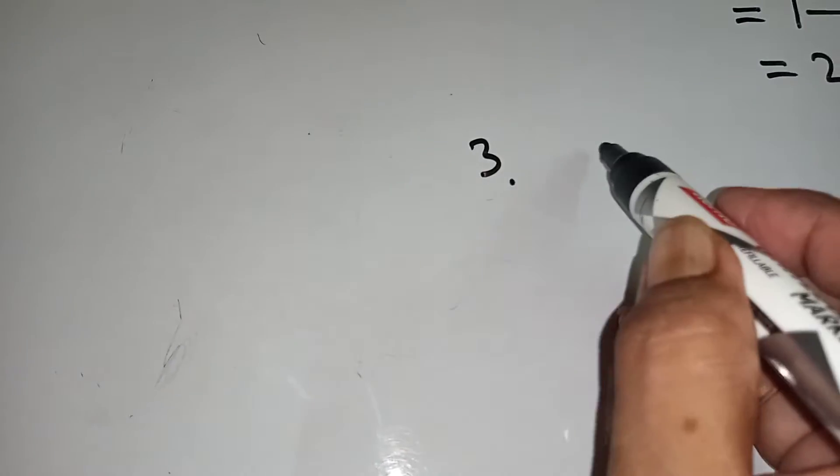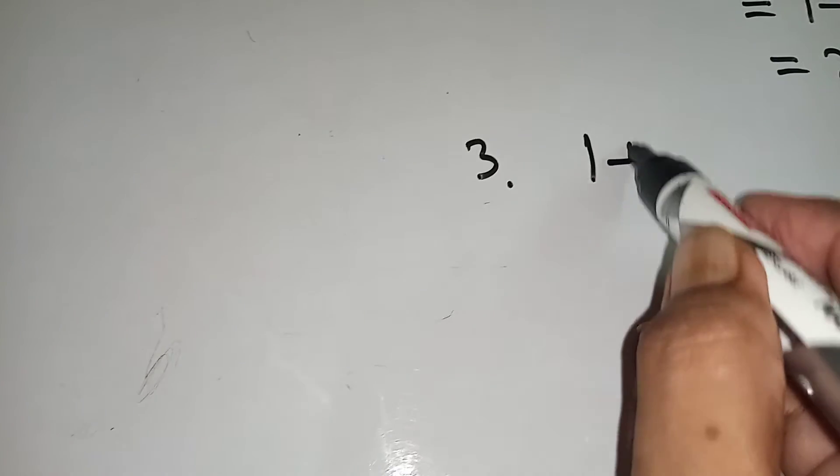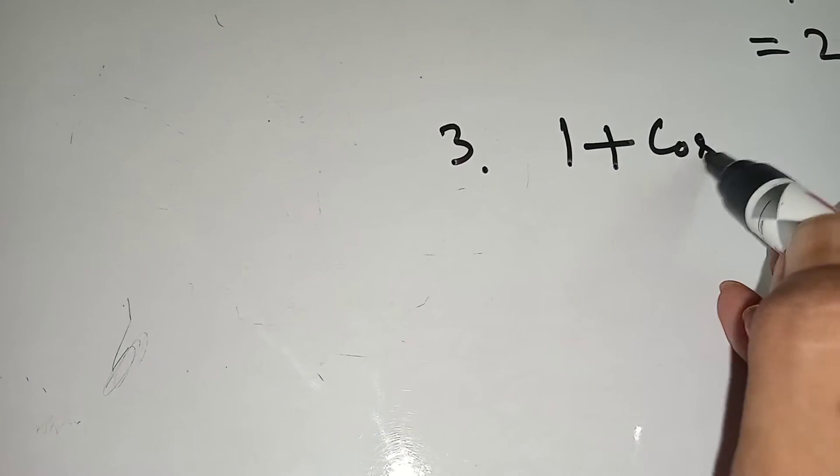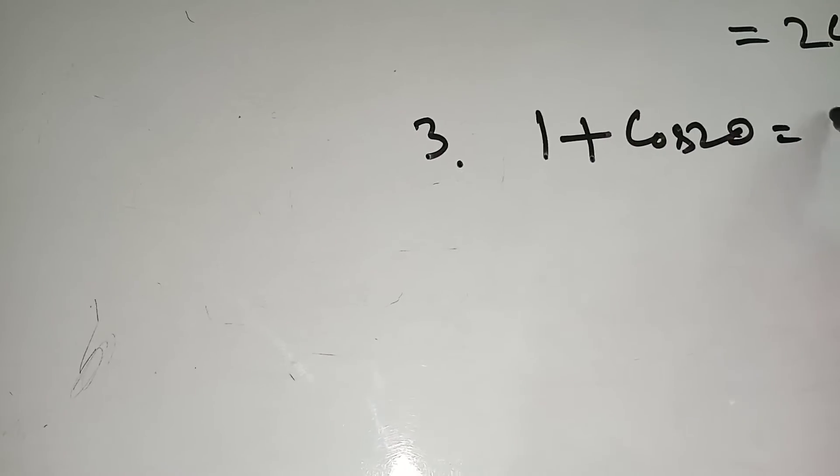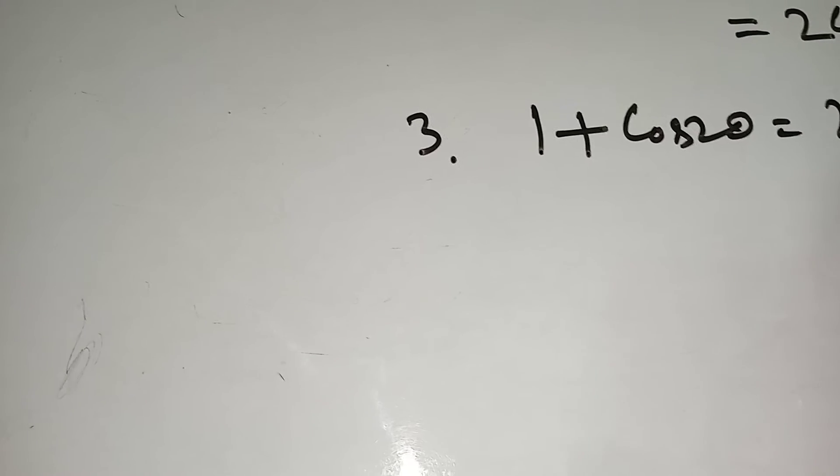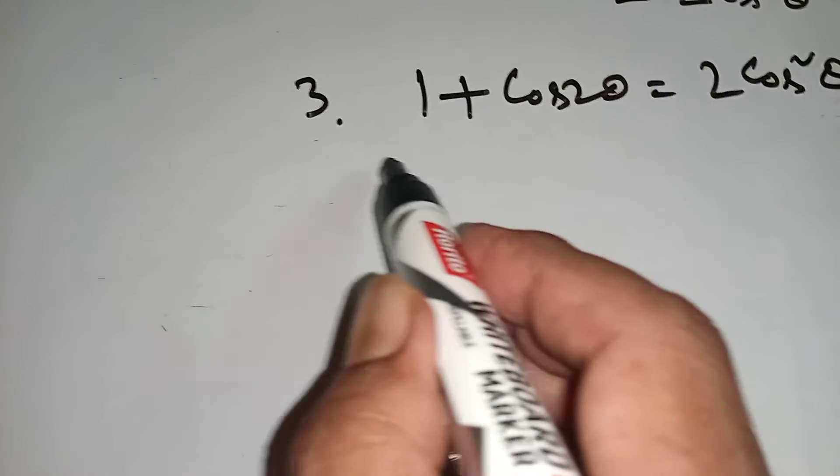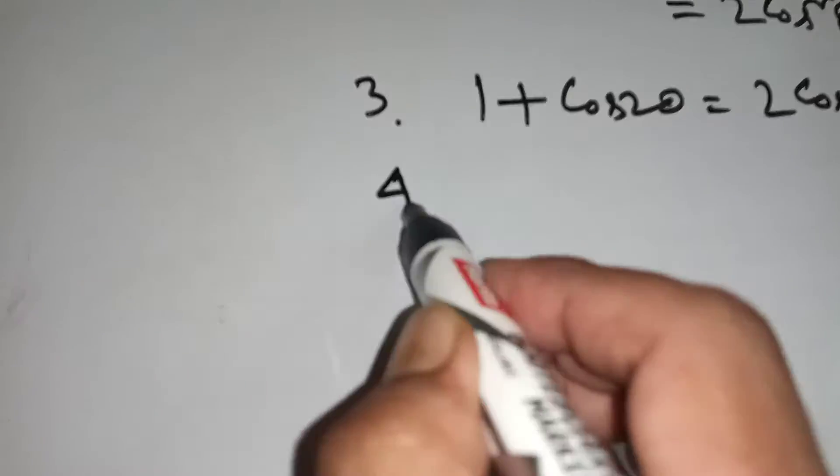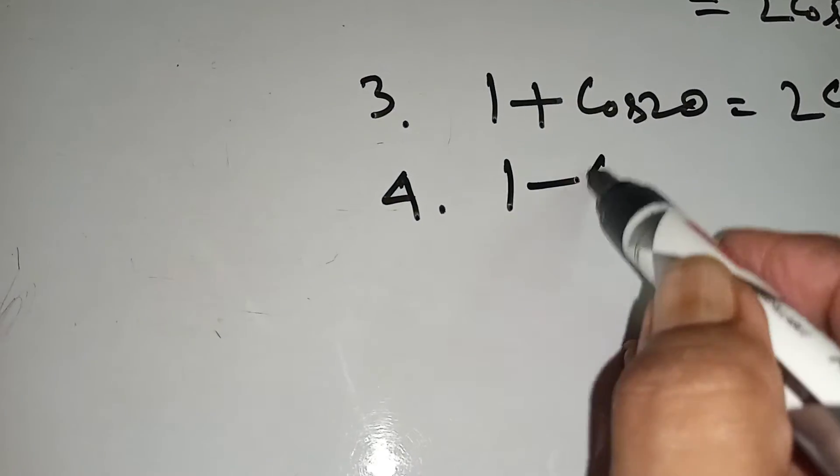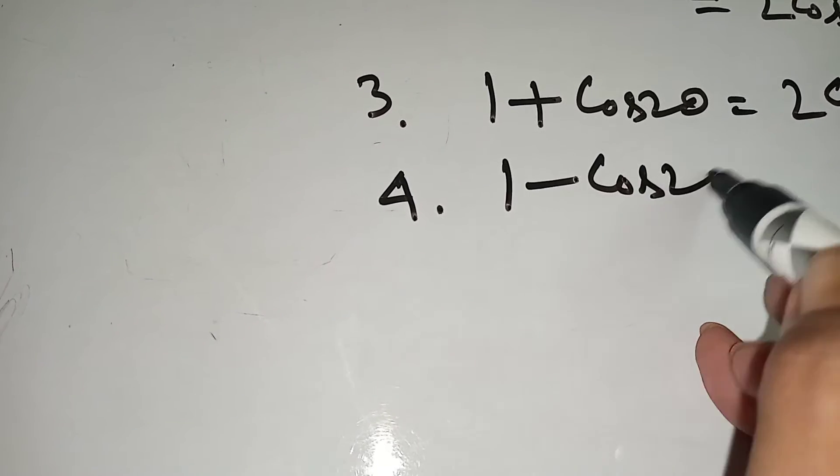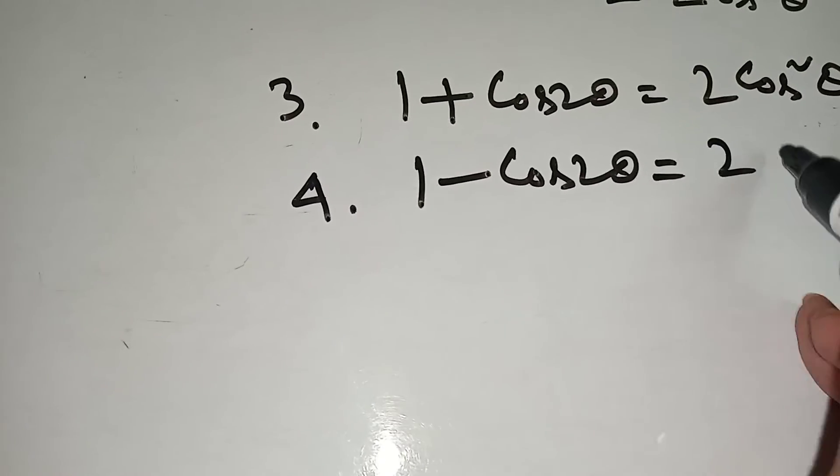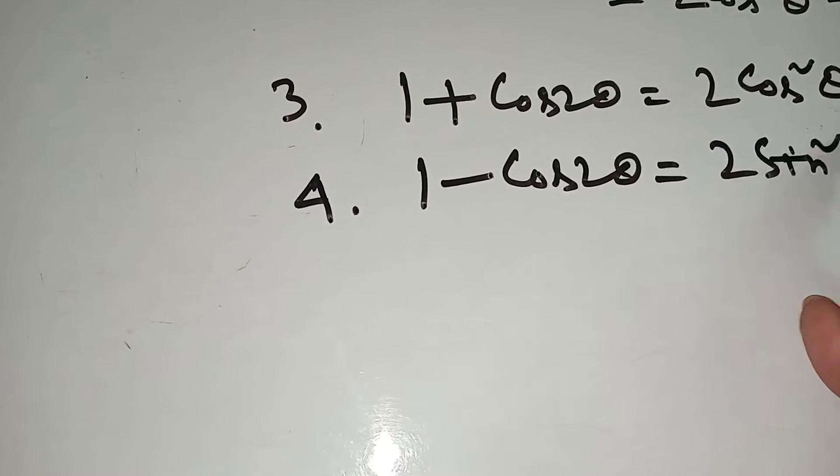Number 3: 1 plus cos 2 theta equal to 2 cos square theta. Number 4: 1 minus cos 2 theta equal to 2 sin square theta.